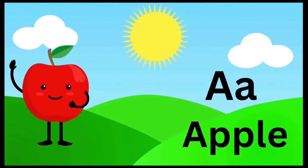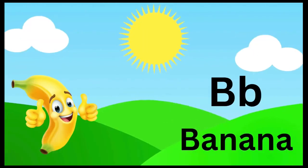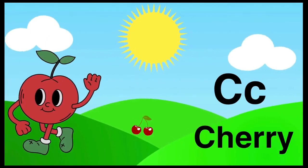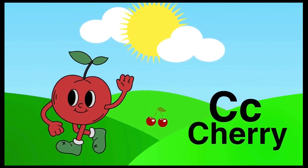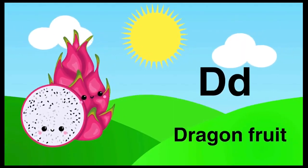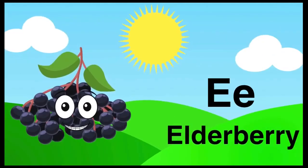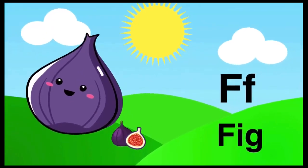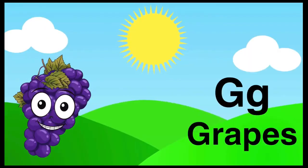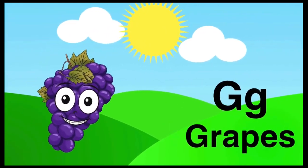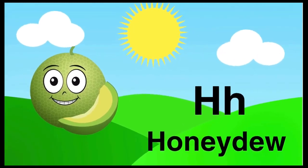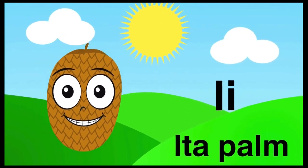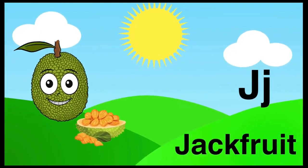A is for apple so sweet and so red, B is for banana the fruit that I fed, C is for cherry all juicy and round, D is for dragon fruit the treasure I've found, E is for elderberry dark and divine, F is for fig like a sweet ancient wine, G is for grape hanging lush on the vine, H is for honeydew a summer sweet sign.